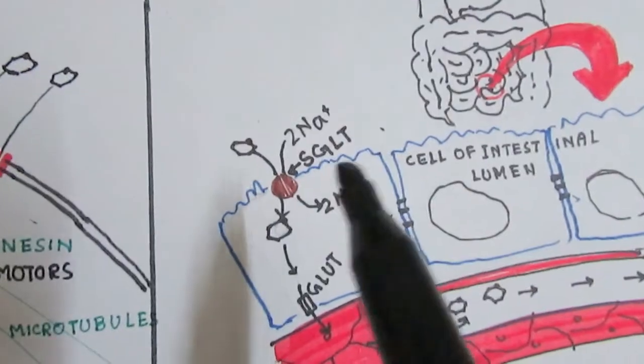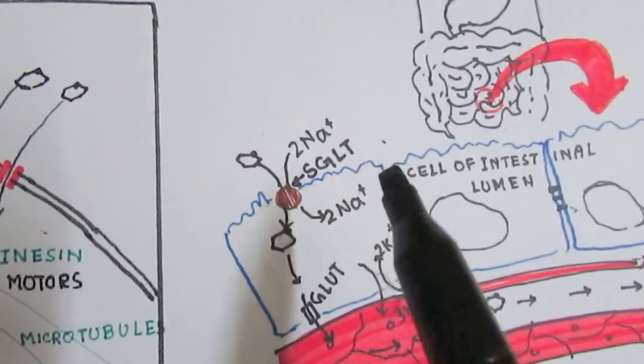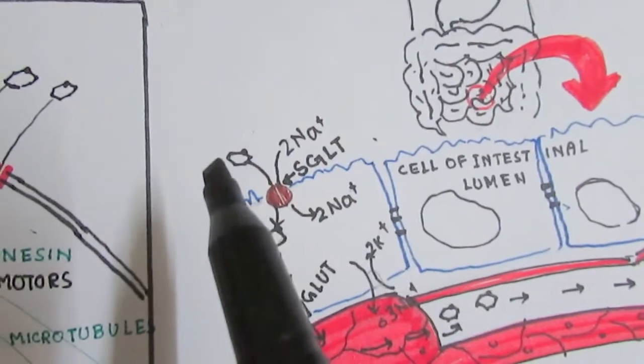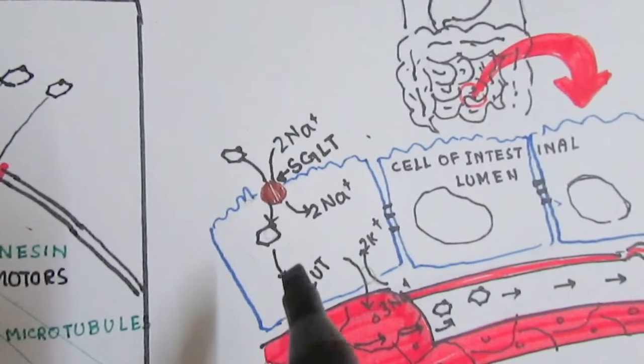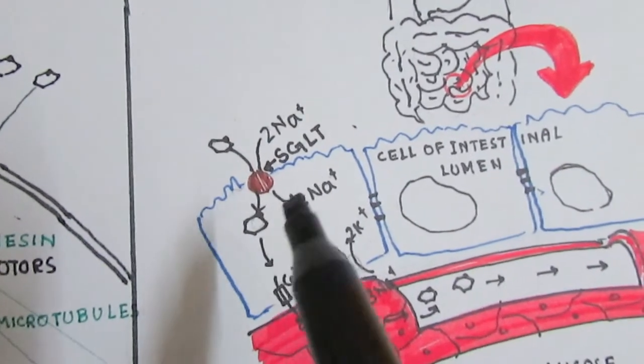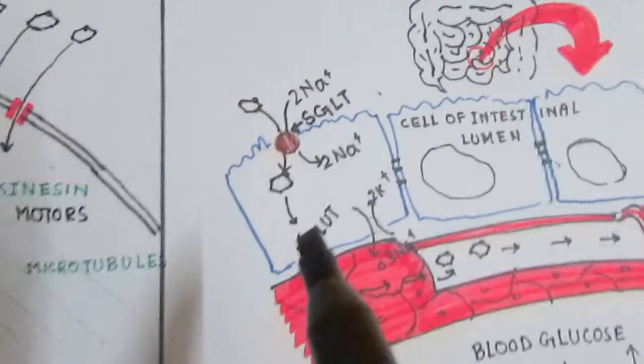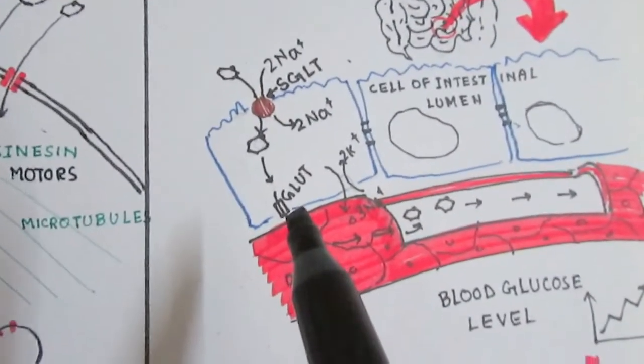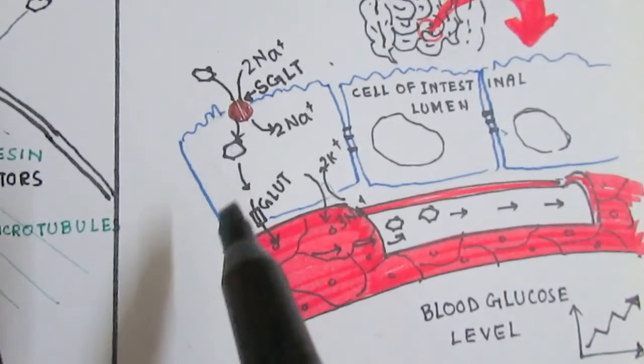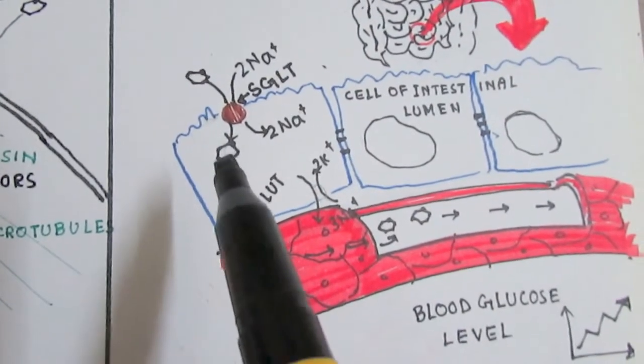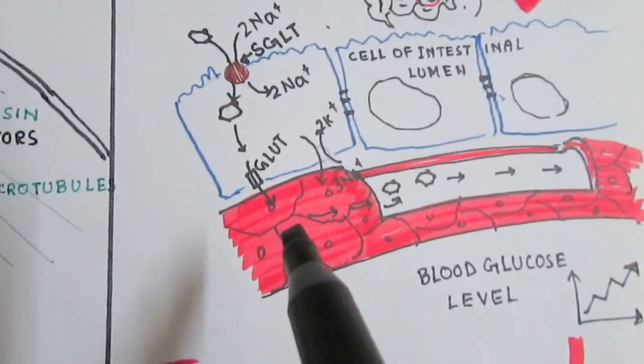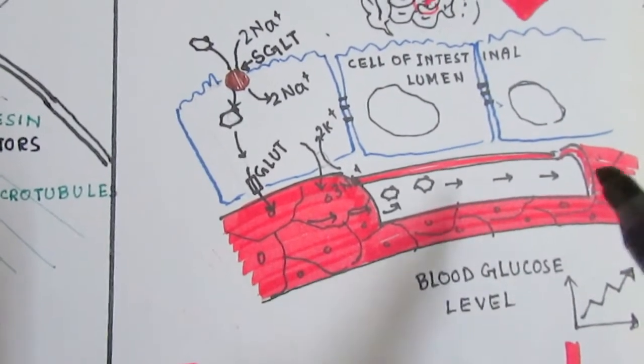In the cells of the intestinal lumen there are sodium-dependent glucose transporters, also known as SGLT. It will take sodium ions inside as well as glucose into the luminal cells. Then we have GLUT, the glucose transporters, which will take glucose into the bloodstream, represented here as a capillary.